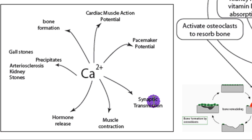In synaptic transmission, calcium enters the presynaptic terminal to cause neurotransmitter release. Calcium is also involved in muscle contraction because it binds to troponin to pull tropomyosin out of the way so actin and myosin can interact. When sperm meets egg, there's a huge wave of calcium that repeatedly goes over the cell. Calcium is also involved in hormone release.